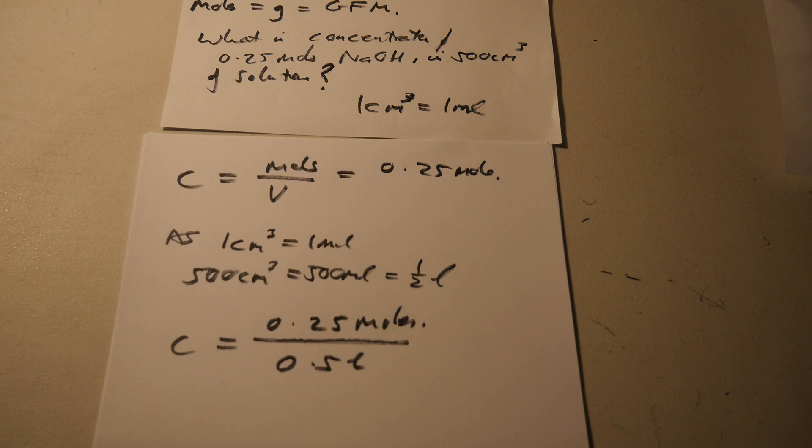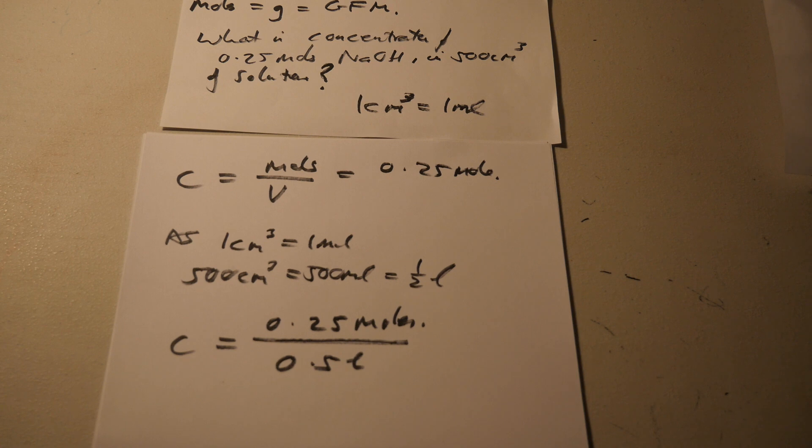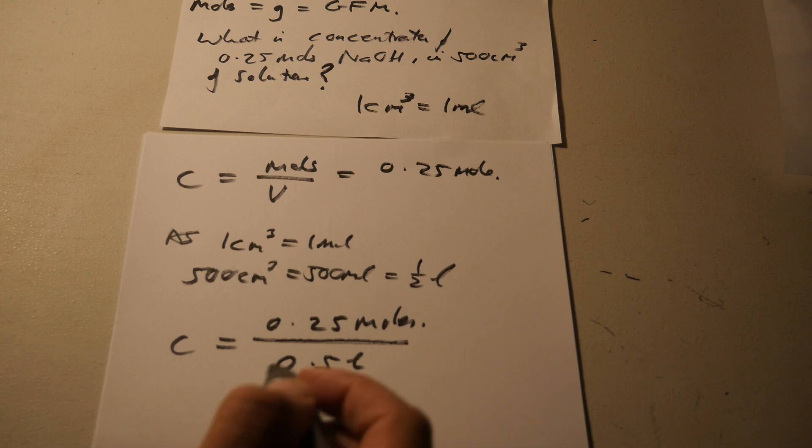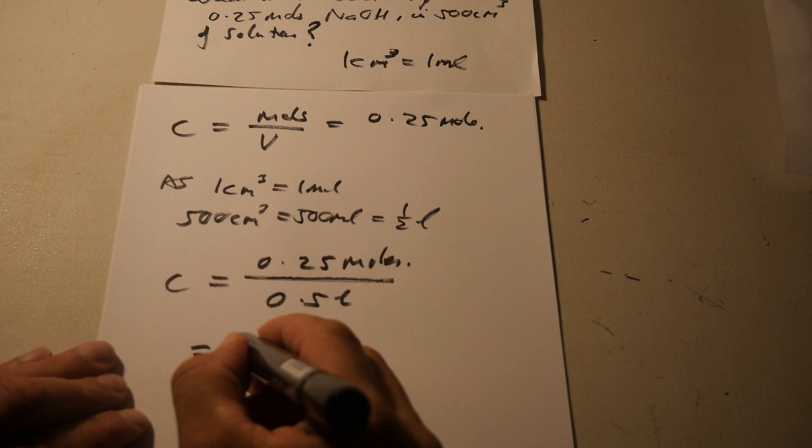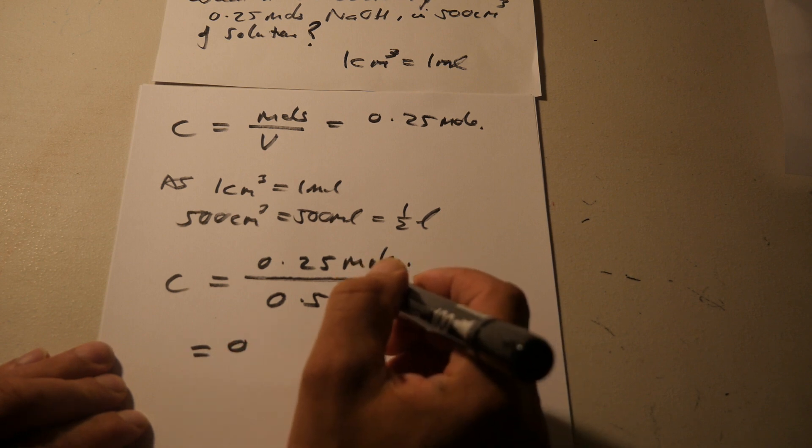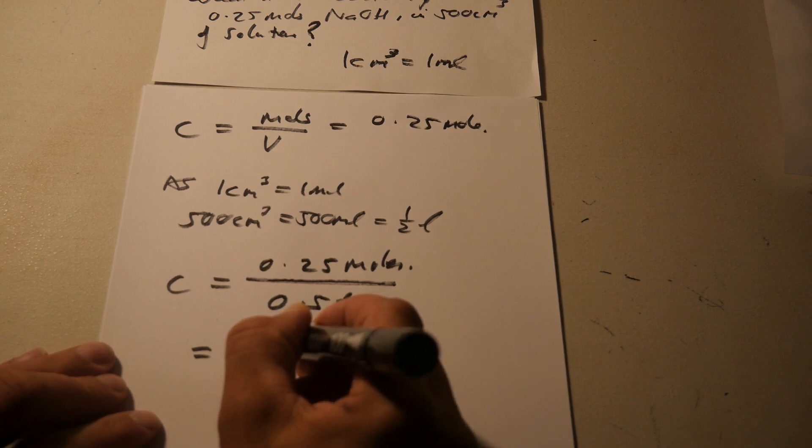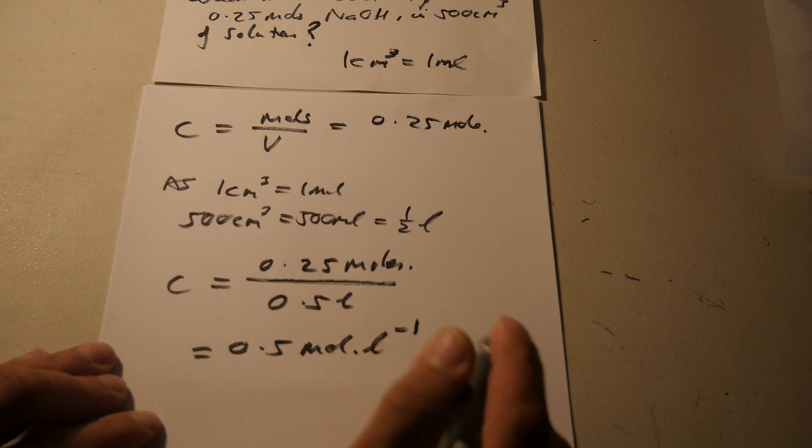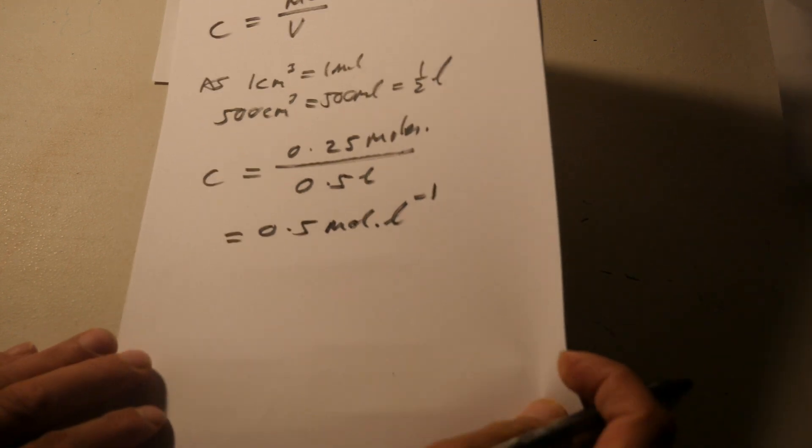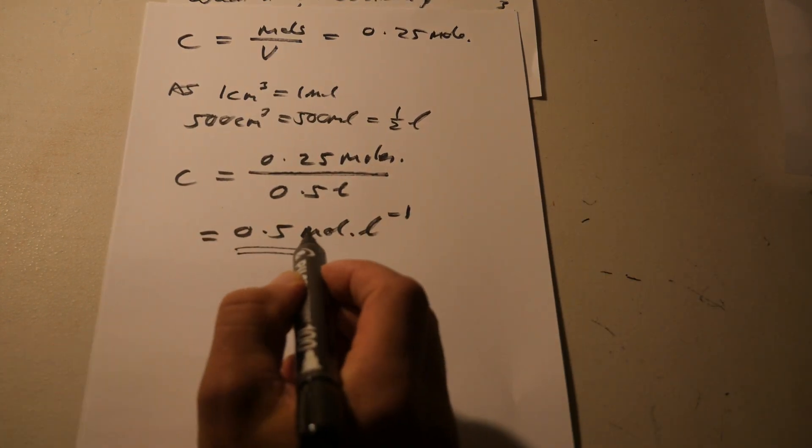So this becomes concentration equals 0.25 moles divided by half a liter, 0.5 liter. It's important to convert it into liters because that's how you measure concentration. 0.25 on the calculator, 0.25 divided by 0.5 equals, wait, it's half. You can see that's half of that. So 0.5 moles per liter. So that's your answer.